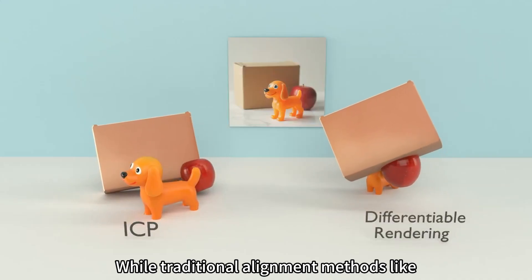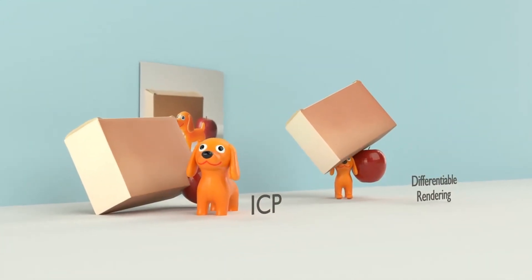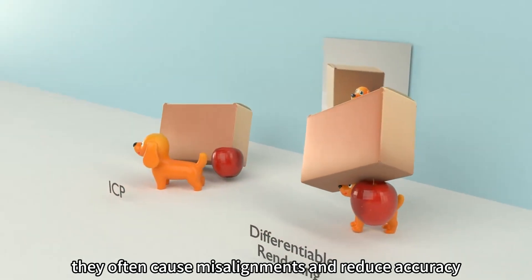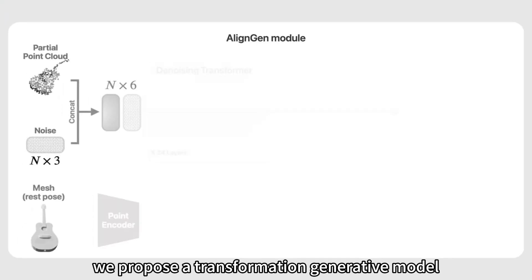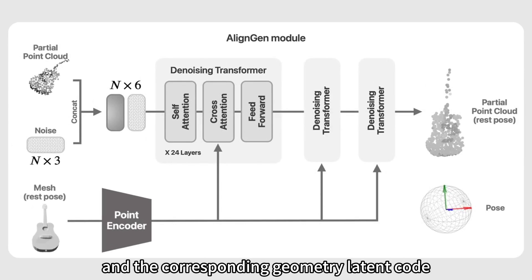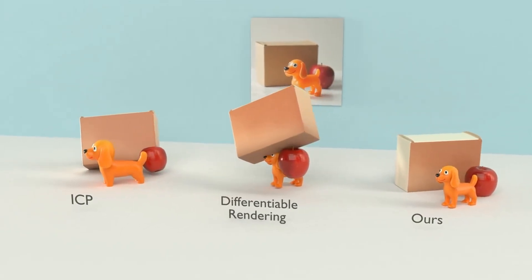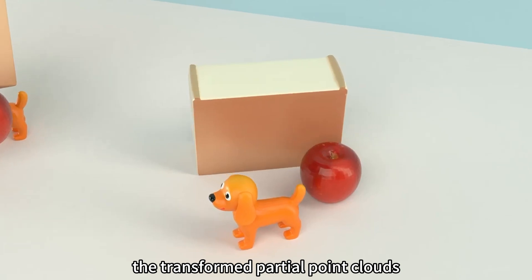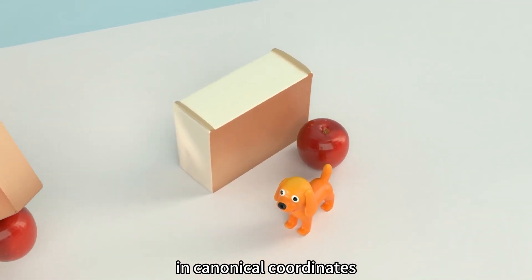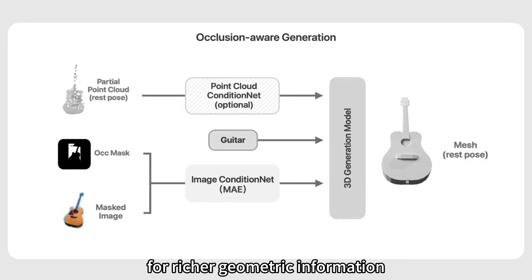While traditional alignment methods like iterative closest point or differentiable rendering are available, they often cause misalignments and reduce accuracy. To address this, we propose a transformation generative model conditioned on the world-space partial point cloud and the corresponding geometry latent code, achieving superior alignment accuracy. We then incorporate the transformed partial point clouds in canonical coordinates as an additional condition for richer geometric information.